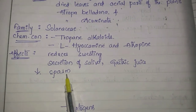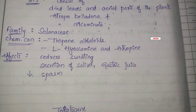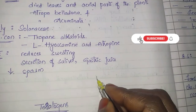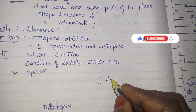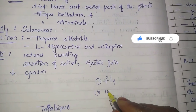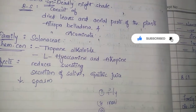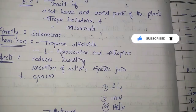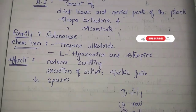The effects of belladonna include reduced sweating, reduced secretion of saliva and gastric juice, and reduced spasms. In summary, the three hallucinogens covered are: fly agaric mushroom, marijuana, and belladonna. Thank you for watching — like, share, and subscribe.